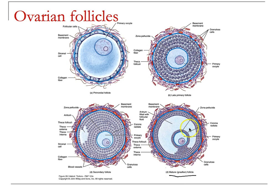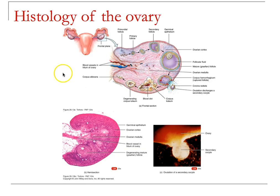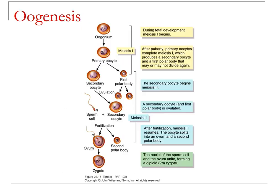By the time you've created the mature Graafian follicle, you have the zona pellucida — a hardened glycoprotein structure with a series of receptors — and the corona radiata, which is a series of granulosa cells that protect the oocyte. Remember, this is a three-dimensional structure with a stalk, so that when it ruptures it can break free. As this develops, the pressure will push the secondary oocyte out because it has gotten close enough to the ovarian germinal epithelium.